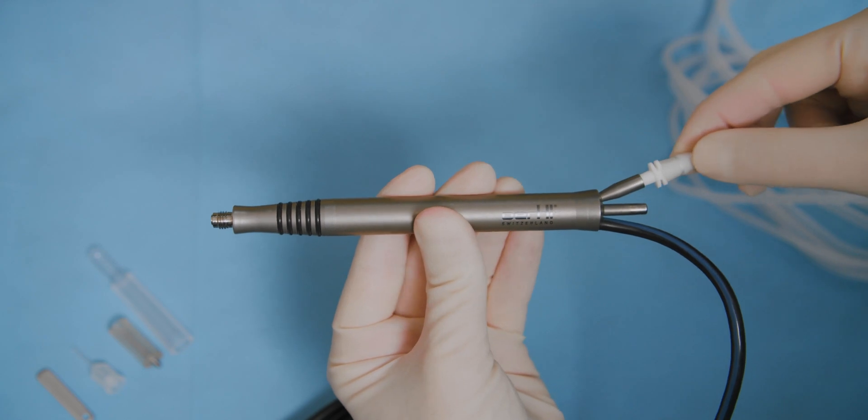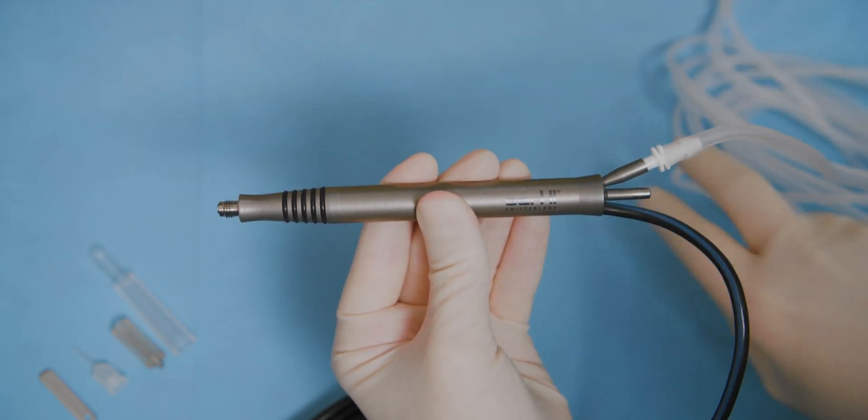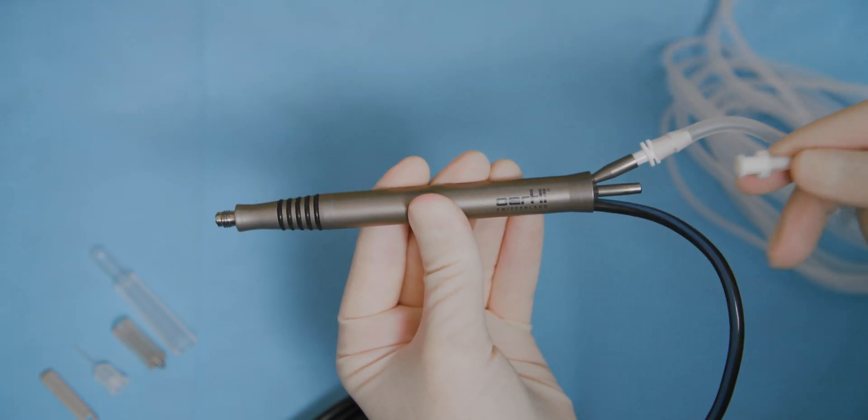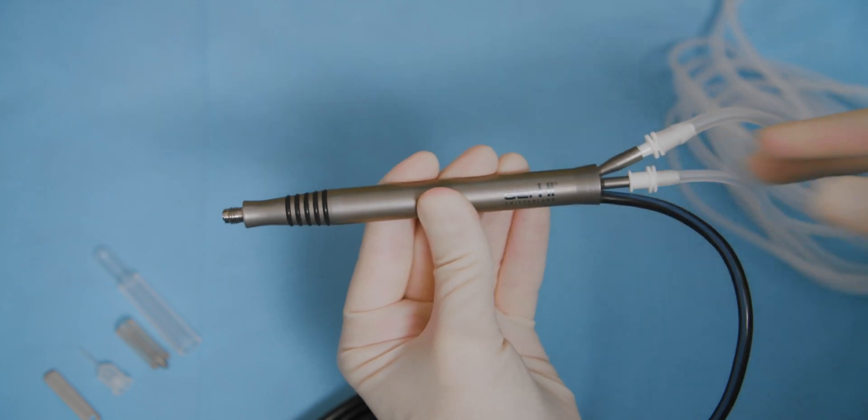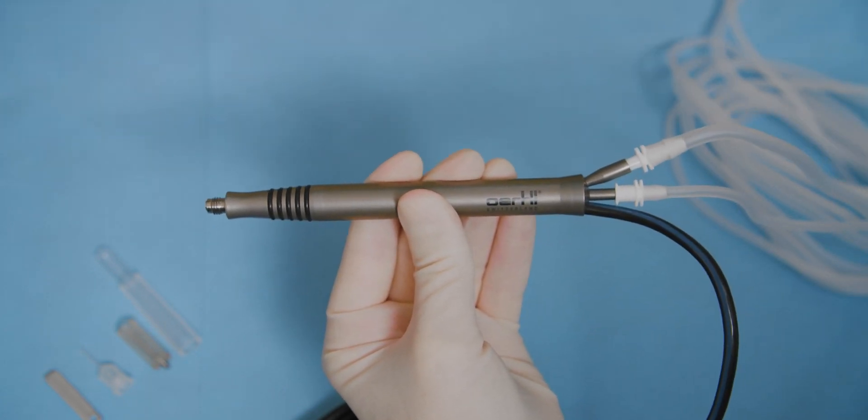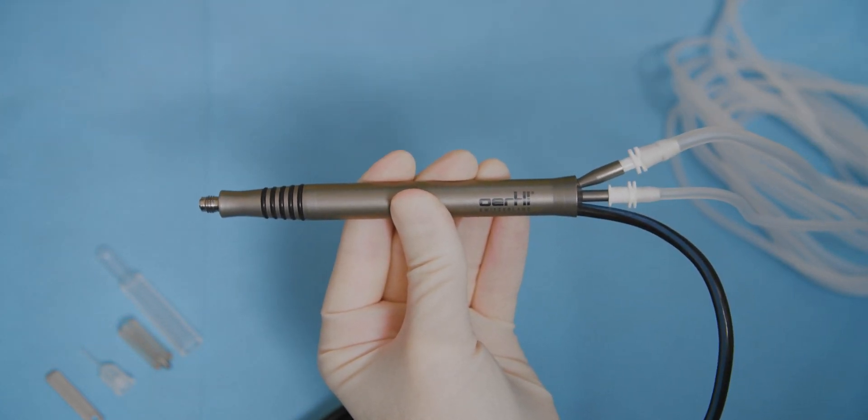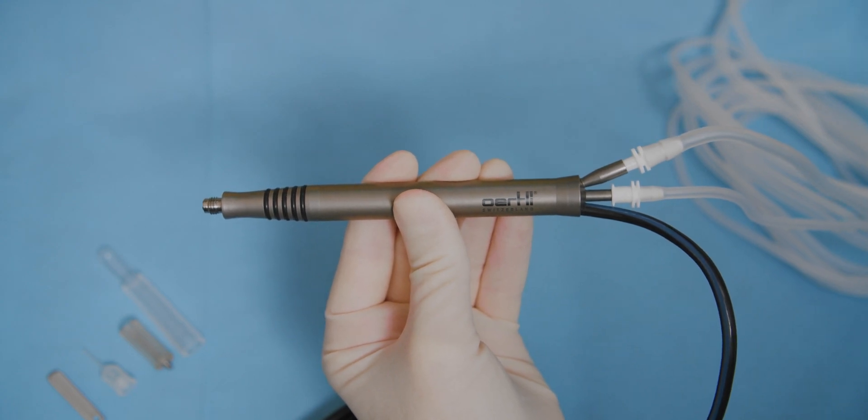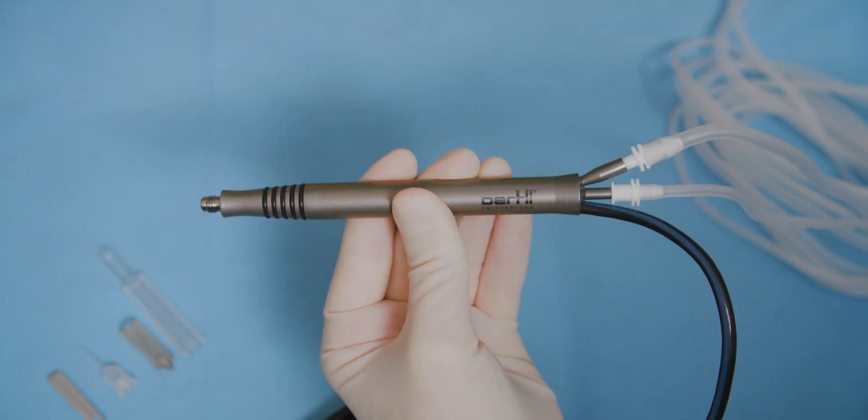Insert the irrigation tube and the aspiration tube into the ultrasound FACO handpiece. The lure connectors are designed to make incorrect connection of the instruments impossible. Make sure the connections are firmly secured.